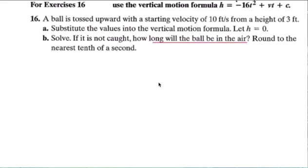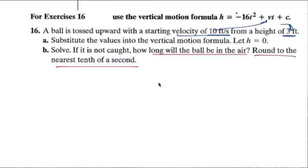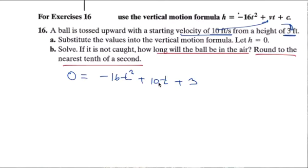This one will be on your test — round to the nearest tenth of a second. I'll do number 16. A ball is tossed upward with a velocity of 10 feet per second from a height of 3 feet. Substitute: let h equal 0, because it's when it hits the ground. So 0 equals negative 16t squared plus 10t plus 3. If it's not caught, how long will it be in the air? Round to the nearest tenth.